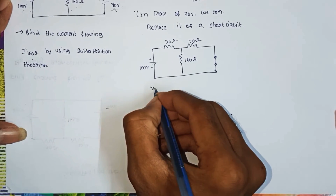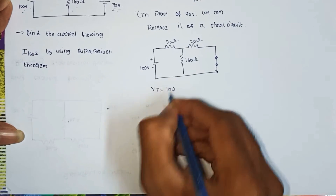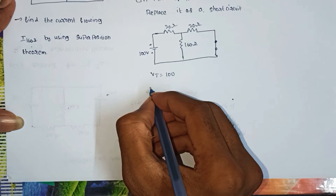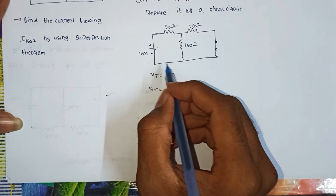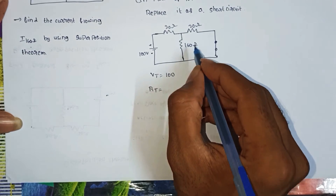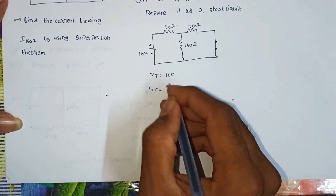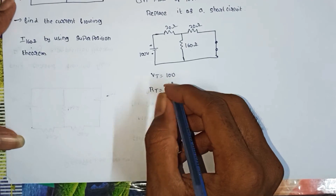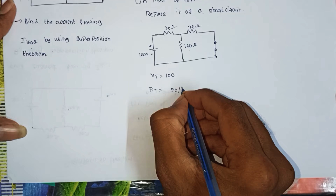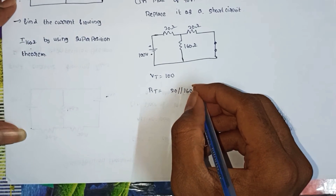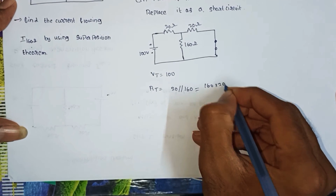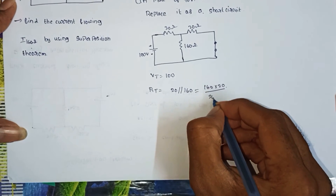So V total equals 100. Next we find R total in this circuit. R total — 20 is parallel to 160. So R total equals 20 parallel with 160 ohms, that is 20 into 160 by 20 plus 160.